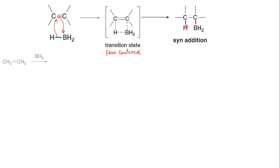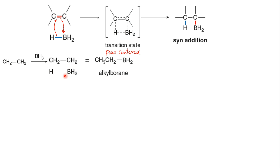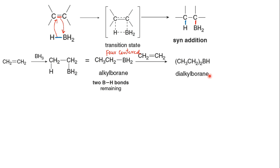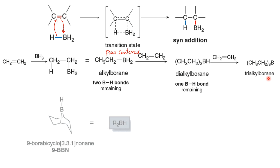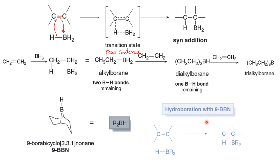The alkylborane formed by reaction with one equivalent of alkene still has two B-H bonds; therefore, it can react with two more molecules of alkene in successive steps to form first a dialkylborane and then a trialkylborane. Because only one B-H bond is needed for hydroboration, commercially available dialkylboranes, with the general structure R₂BH, are sometimes used instead of BH₃. A common example is 9-Borabicyclo[3.3.1]nonane, or 9-BBN. 9-BBN undergoes hydroboration in the same manner as BH₃.